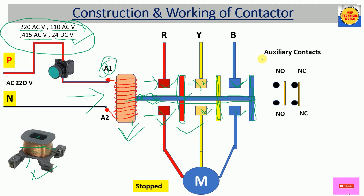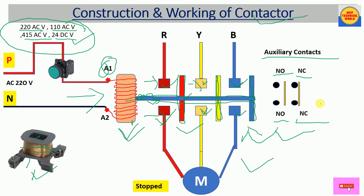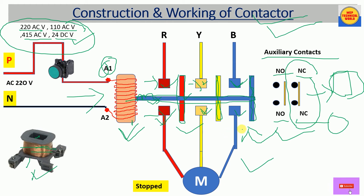We also have normally open contacts and normally closed contacts. These auxiliary contacts can be used for holding or latching purposes, or the remaining auxiliary contacts can be used for monitoring the contactor condition — whether it is off or on. You can connect indicators here to monitor the contactor. These are the major components of this contactor.